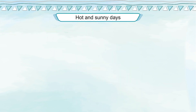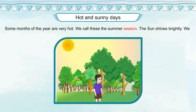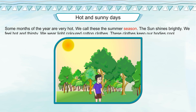Hot and Sunny Days. Some months of the year are very hot. We call these the summer season. The sun shines brightly. We feel hot and thirsty. We wear light-colored cotton clothes. These clothes keep our bodies cool.